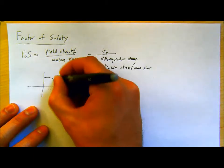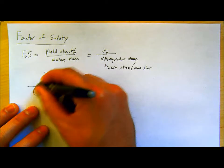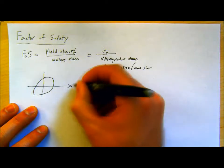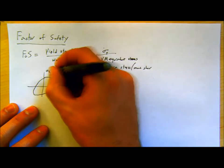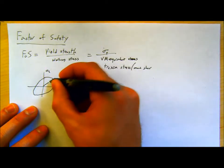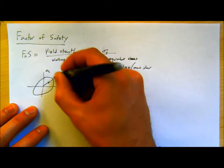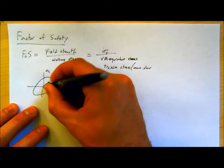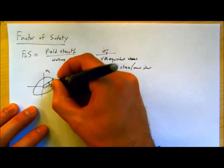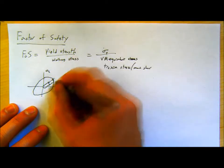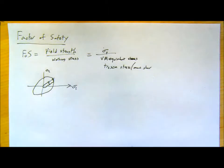In stress space, say I have a point here and my failure surface is here — it's how far you are from your failure surface for any given stress state, and it's normally reported in terms of Mises stress or equivalent stress.